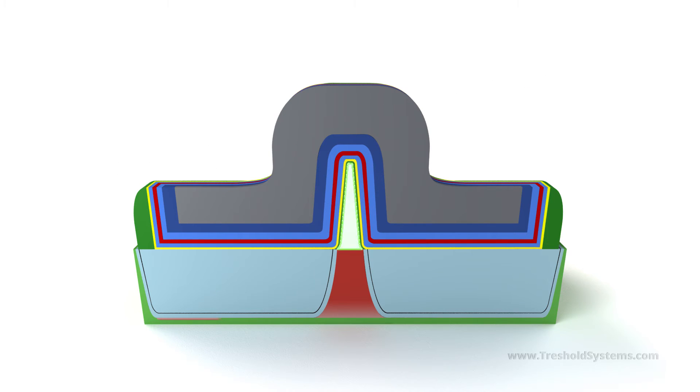When the gate electrode is energized, it now has excellent control over the channel because it surrounds the channel, and the transistor width now consists of three components.